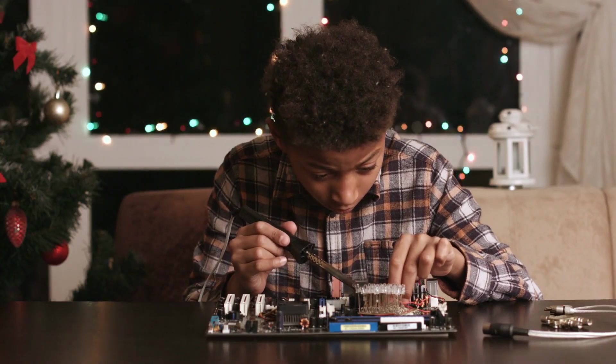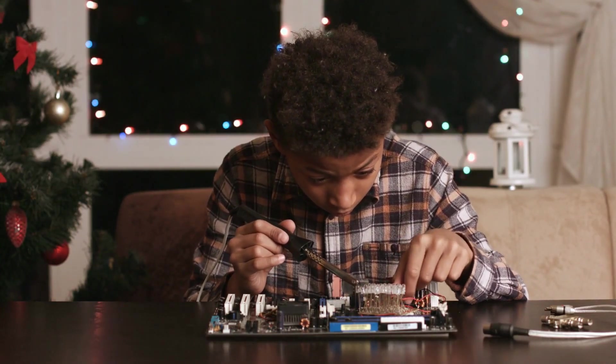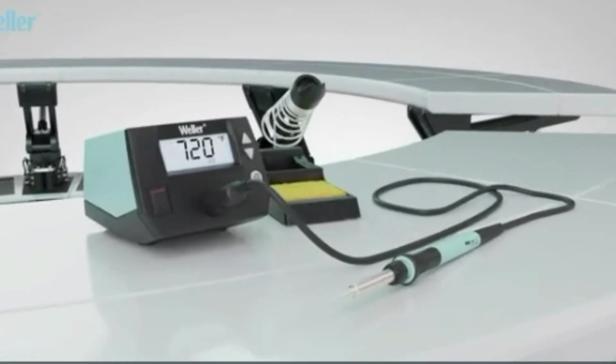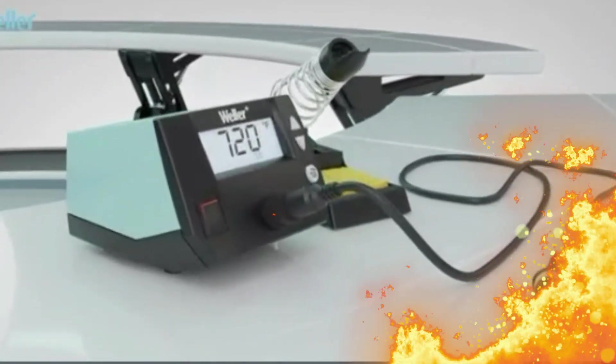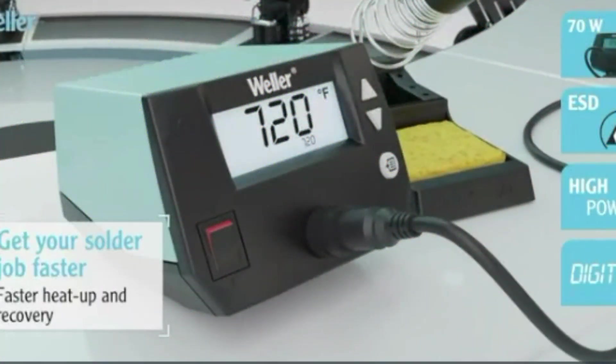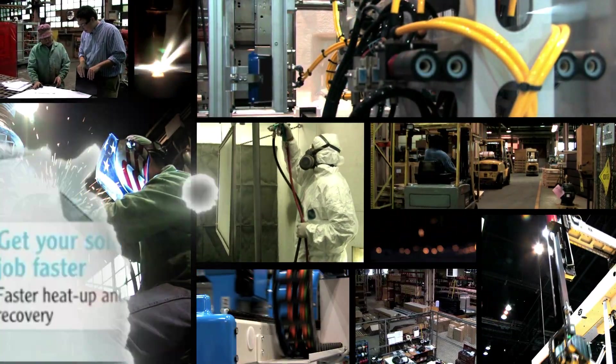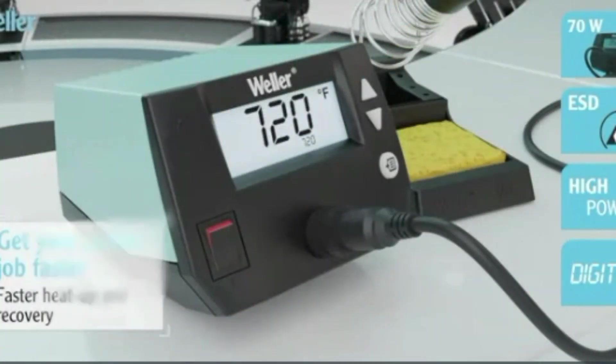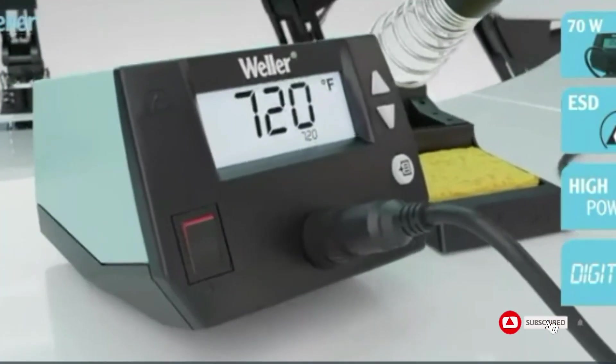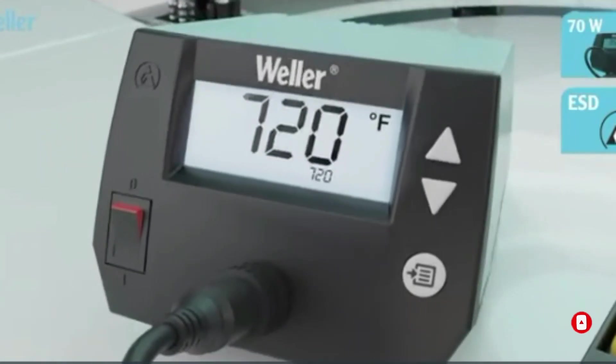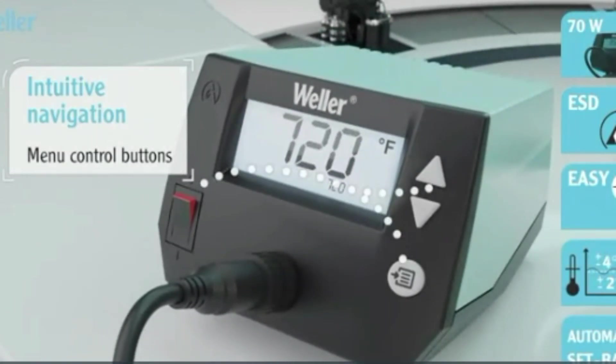Weller has always been known for ergonomic, user-centric design, and the WE1010NA is no exception. The iron is lightweight and comfortable to hold, making it ideal for long sessions. It also comes with a high-quality ET soldering tip, and the unit is compatible with a wide variety of Weller tips, making it versatile for different types of soldering jobs. The temperature control is digital and accurate, ranging from 200 degrees Fahrenheit to 850 degrees Fahrenheit.